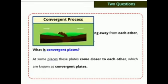Convergent plates are those where plates come closer to each other. When the plates move towards each other, they are known as convergent plates. To summarise: divergent means to move away or drift away from each other, and convergent means to come together or come closer.